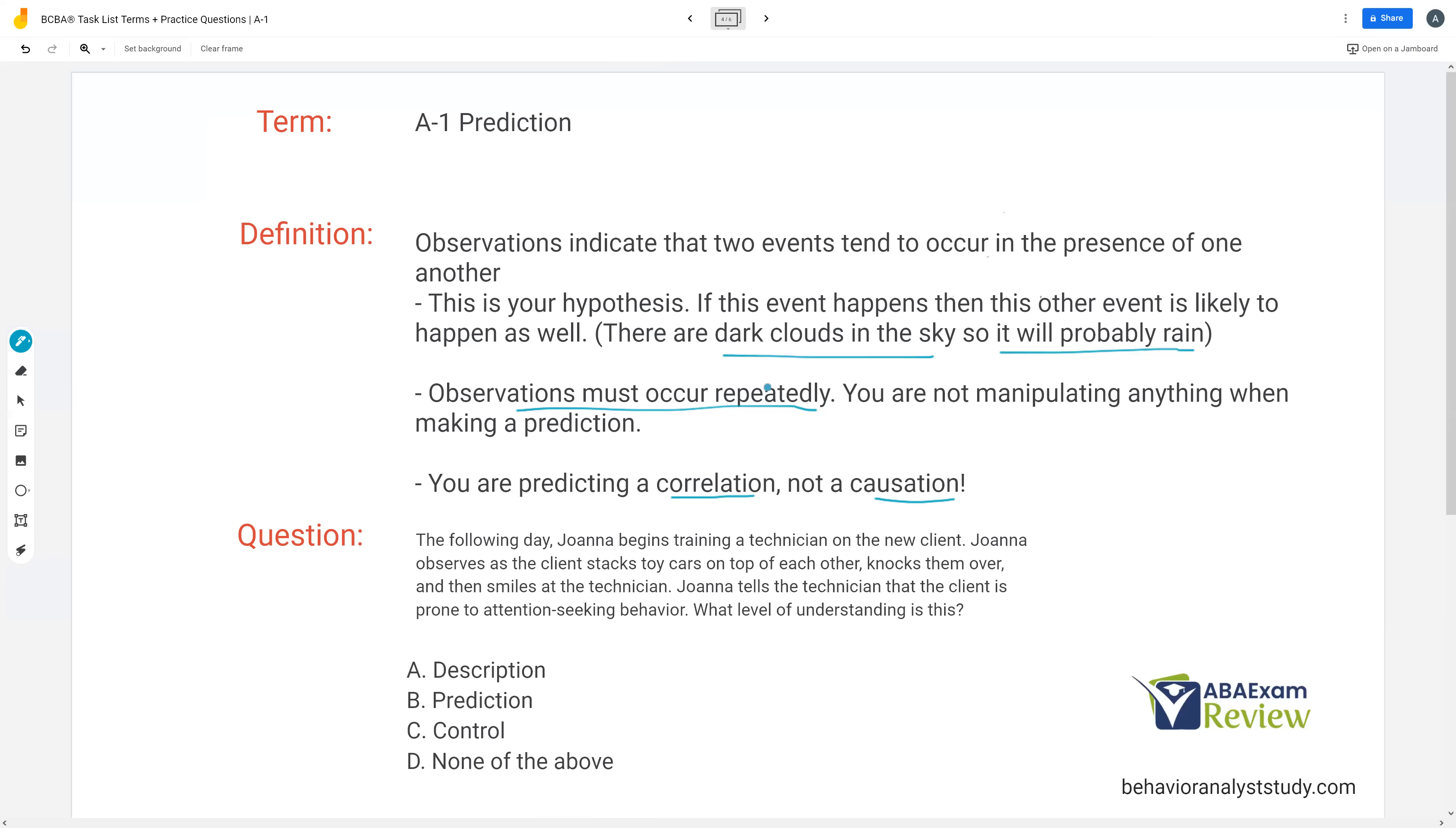So dark clouds and rain are correlated. But we're not always going to say, well, the dark clouds caused the rain. We're predicting correlations between environmental events and behavior because the problem is we can't control the environment 100%. There are so many different factors in the environment that could be impacting the behavior that we're not even aware of. So when we talk about our predictions and our hypotheses, we're saying these things are correlated. We're not saying this causes this. We're just saying typically when this happens, this also happens. So prediction is a correlation, not a causation.